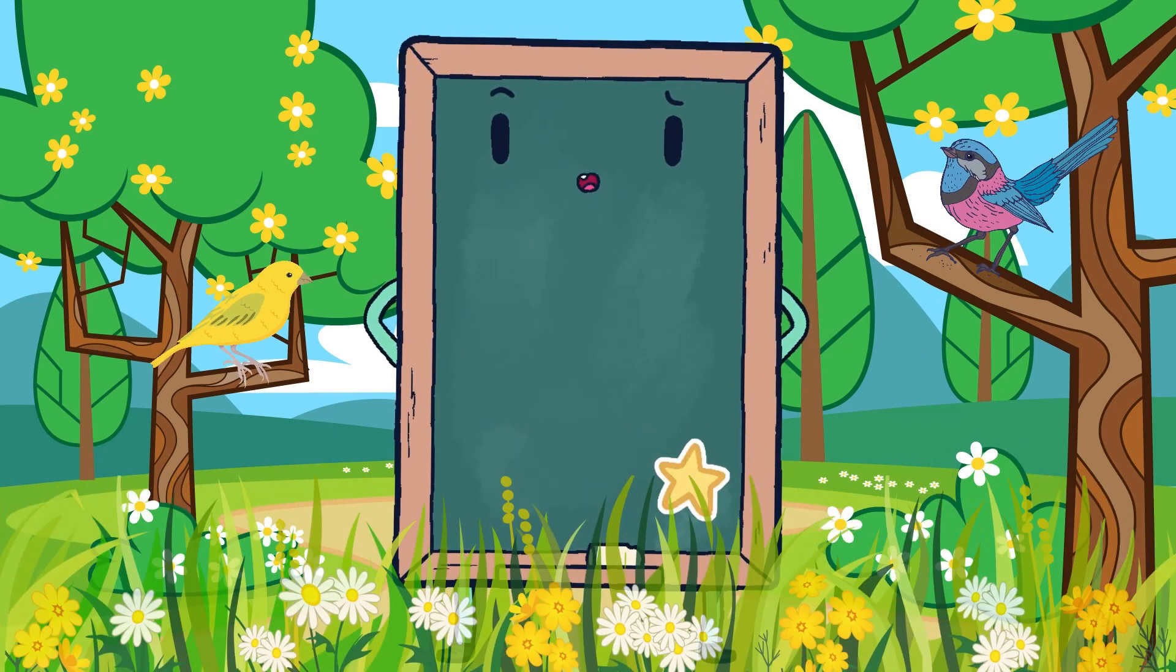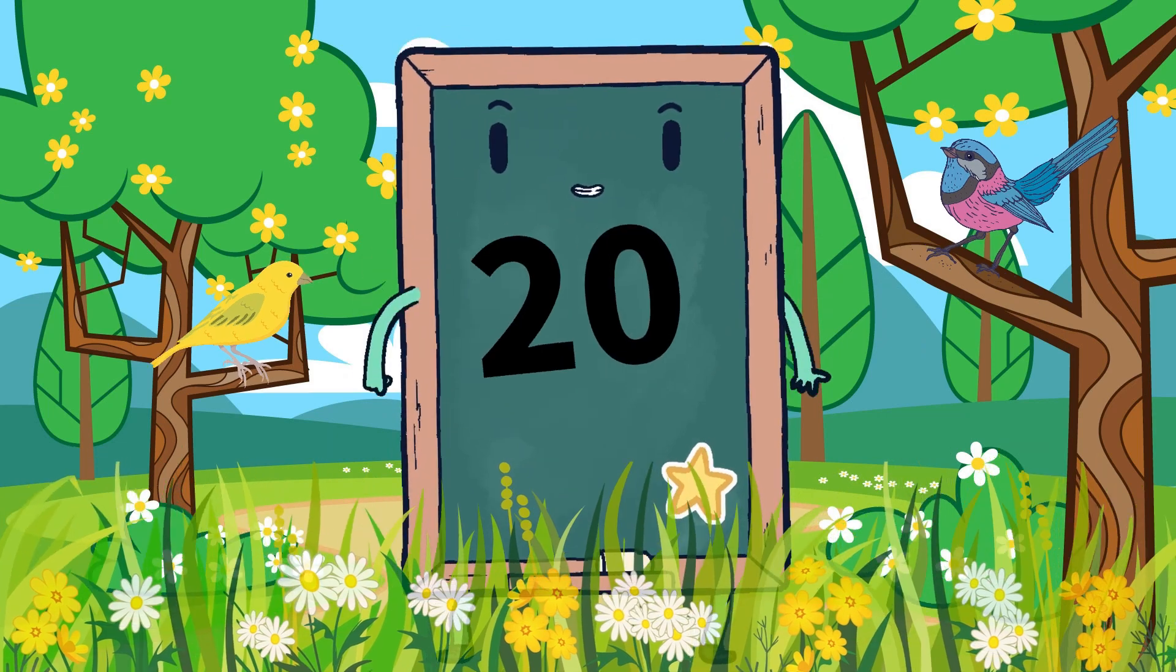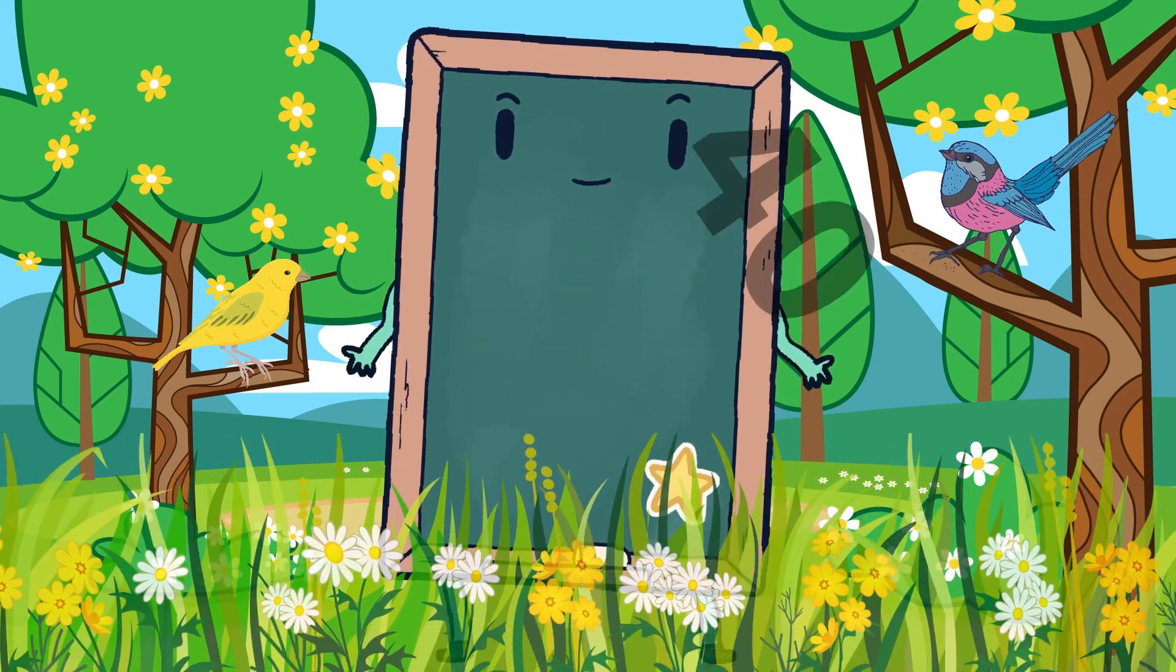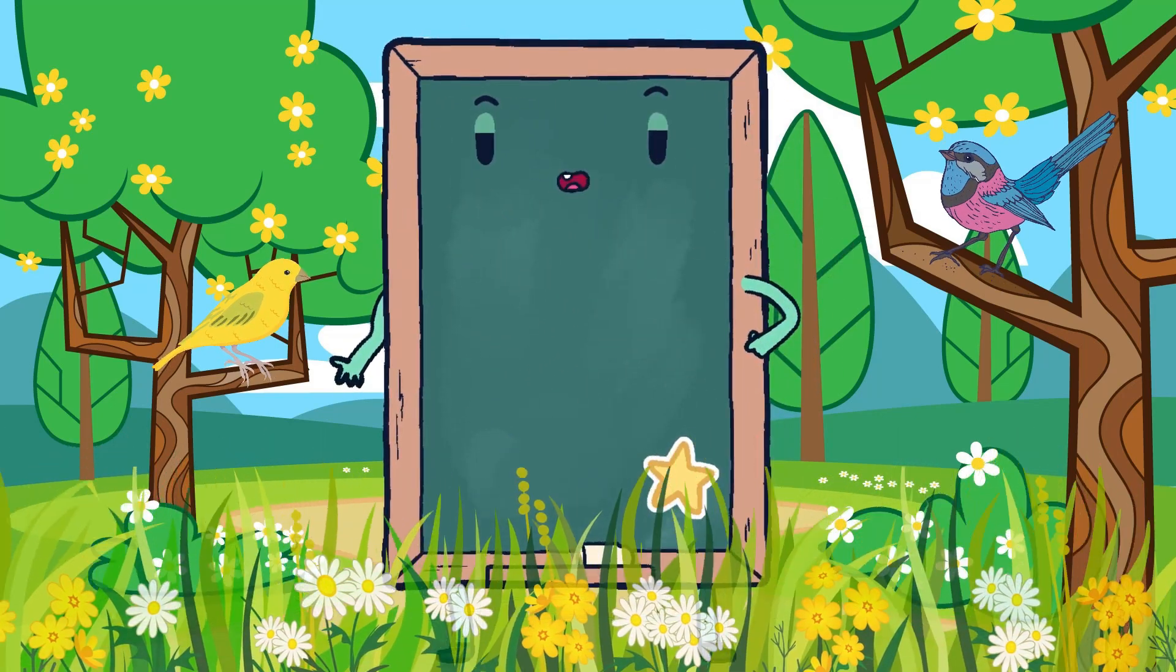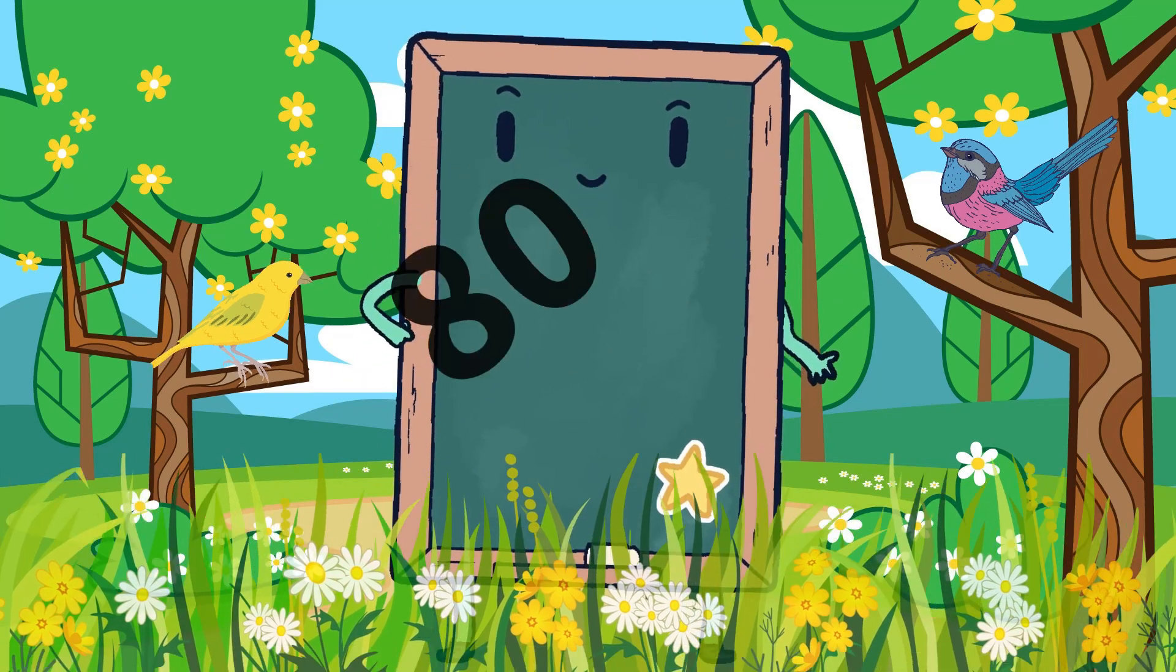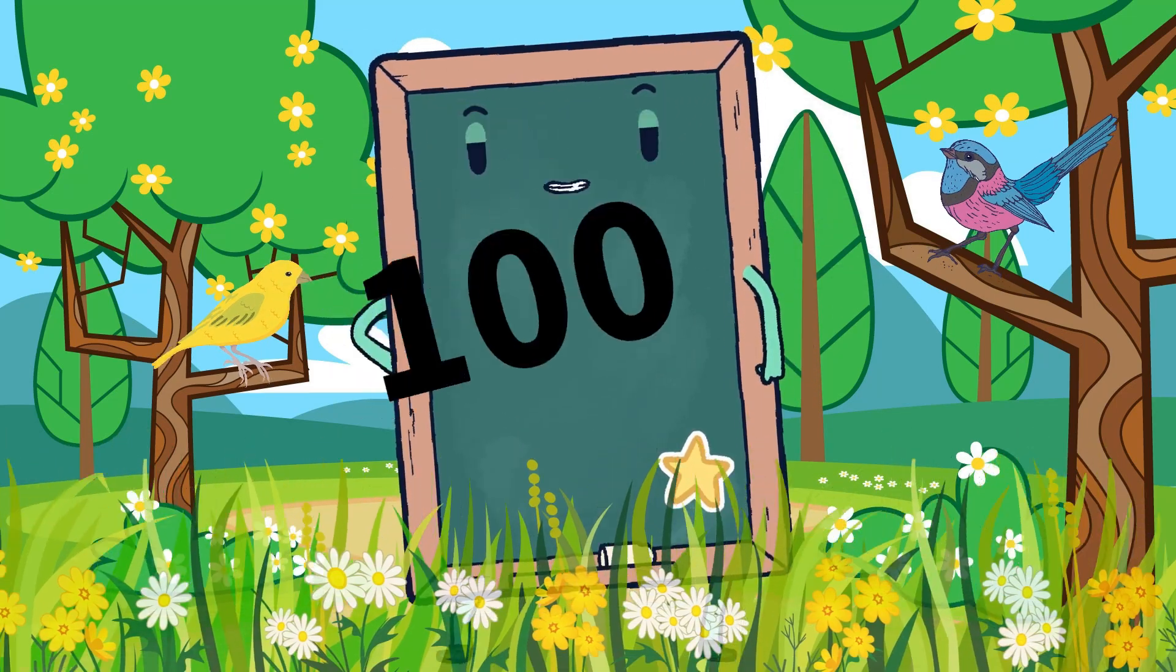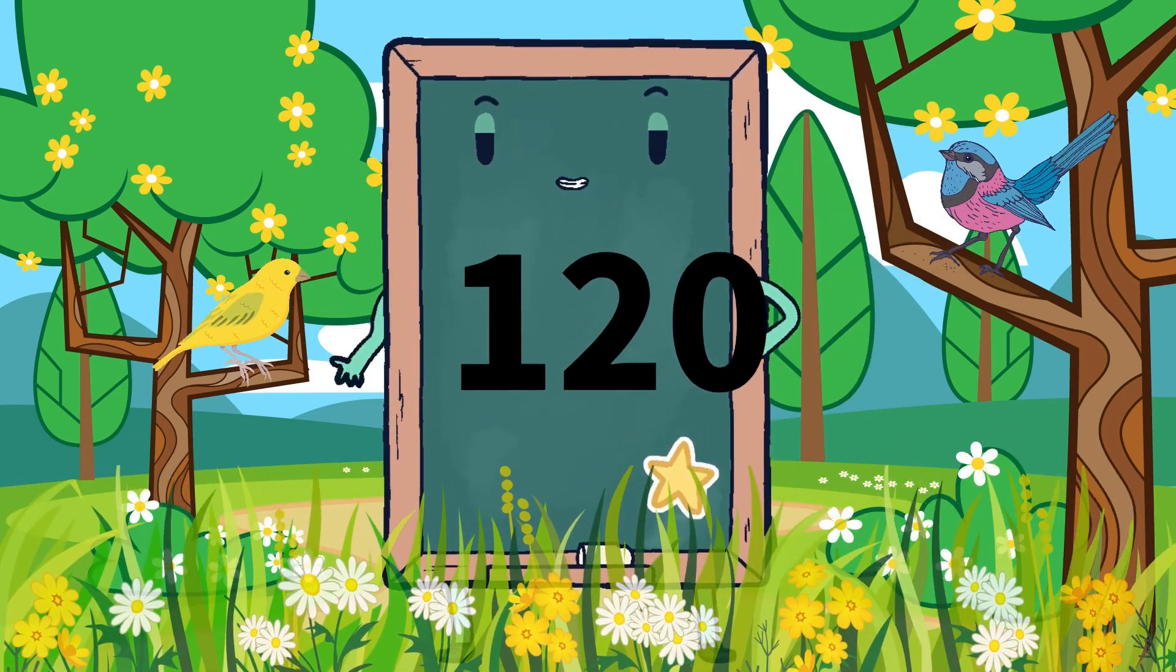let's do it once again, quickly. 10 times 1 is 10, 10 times 2 is 20, 10 times 3 is 30, 10 times 4 is 40, 10 times 5 is 50, 10 times 6 is 60, 10 times 7 is 70, 10 times 8 is 80, 10 times 9 is 90, 10 times 10 is 100, 10 times 11 is 110, 10 times 12 is 120. So kids,